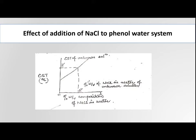In our experiment, we are checking the influence of adding sodium chloride on the phenol-water system. Sodium chloride is a very strong electrolyte with very high solubility in water, so theoretically it will reduce the solubility of phenol in water and increase the critical solution temperature of the phenol-water system. If we plot a graph between critical solution temperature and percent weight-by-weight composition of sodium chloride in water, as the concentration of sodium chloride increases, the critical solution temperature also increases.